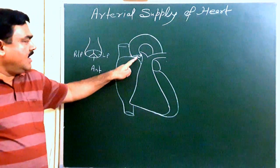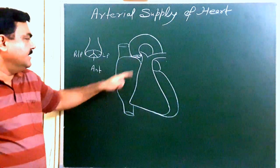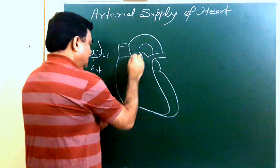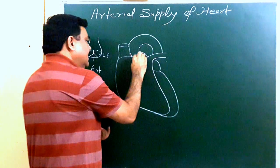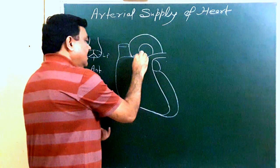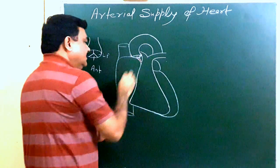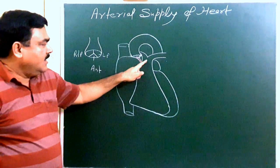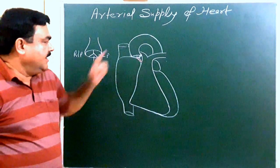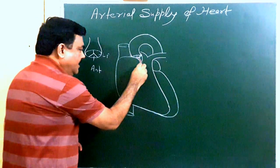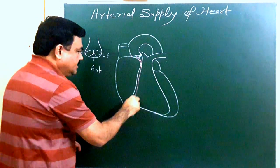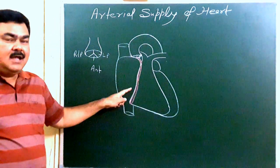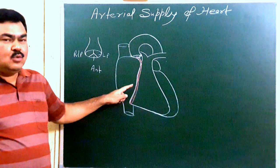Here is the position of the anterior aortic sinus. The right coronary artery arises from the anterior aortic sinus and passes between the right auricle and the pulmonary trunk, then runs in a groove known as the right atrioventricular groove, or coronary sulcus.